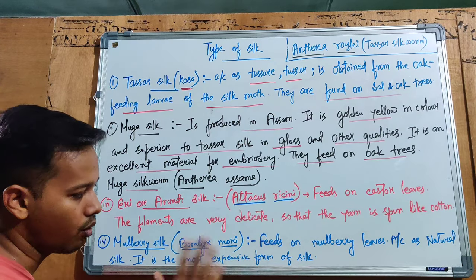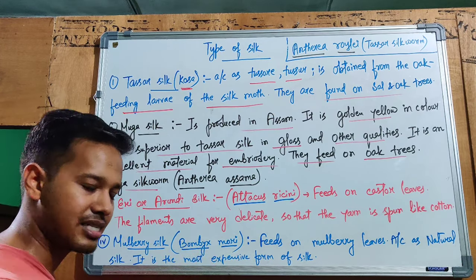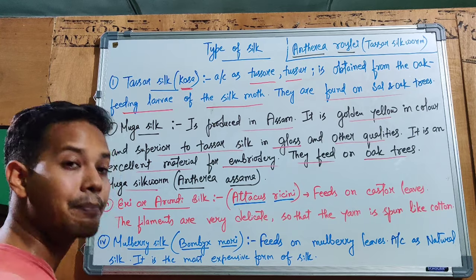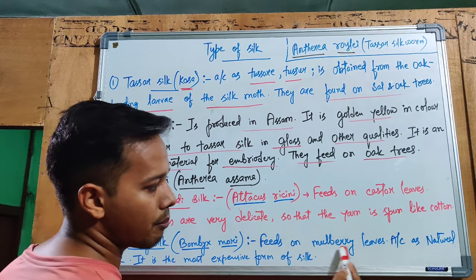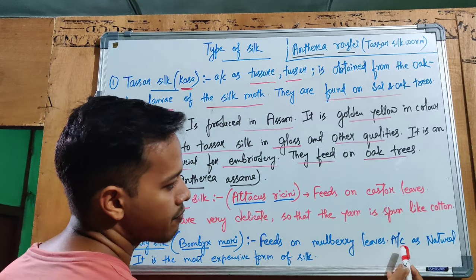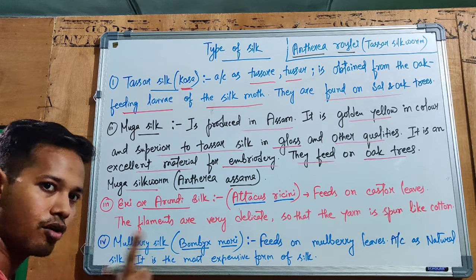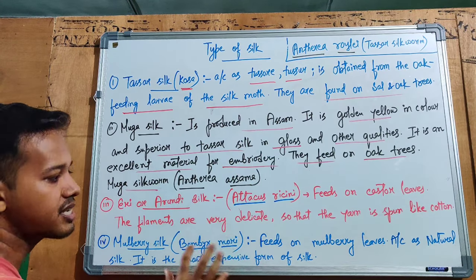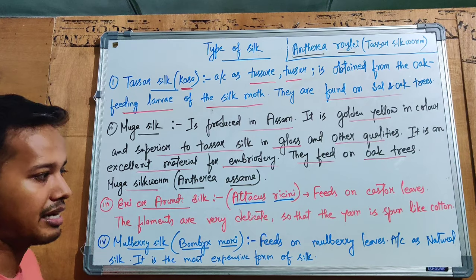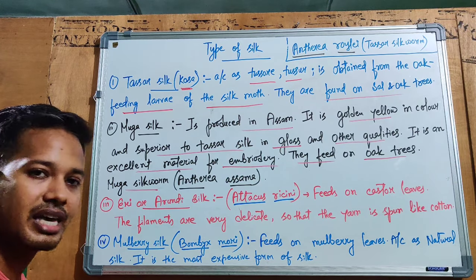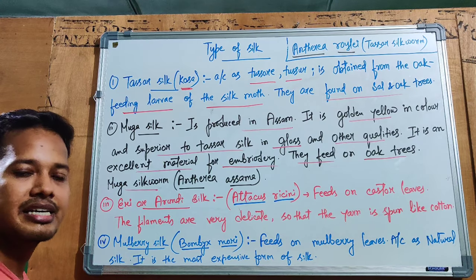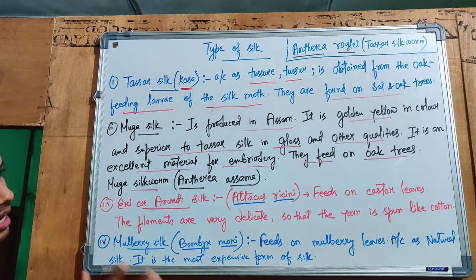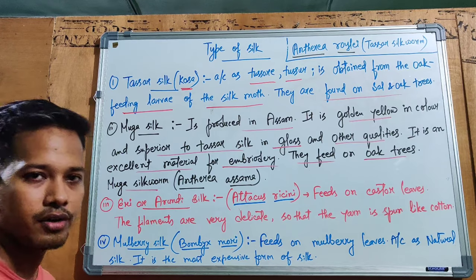The fourth type is Mulberry silk. The mulberry silkworm's scientific name is Bombyx mori. Mulberry silk is also called natural silk. It is the most expensive form of silk. We will discuss its life cycle and methodologies of rearing next.